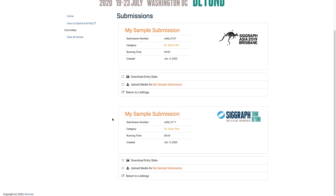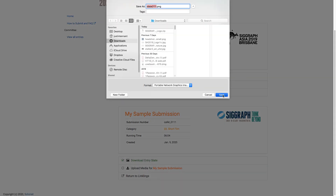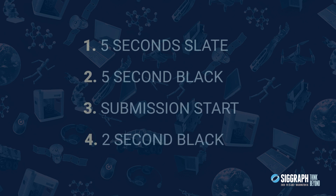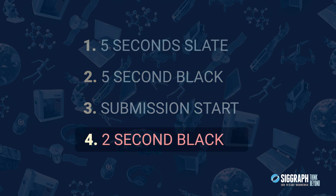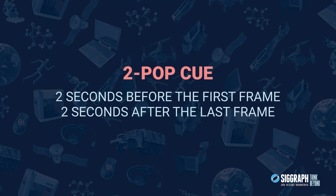Once I click the link, I'll be taken to the Video Upload webpage. The first thing I'll need to do is download the Entry Slate. Each slate is auto-generated for each entry, and I'll need to include this at the beginning of my video. We require that this slate be presented in the following order: 5-second slate, 5-second black, submission start, 2-second black. We also require an audio and visual 2-pop cue 2 seconds before the first frame, and 2 seconds after the last frame of the work. We have more specifications on video and audio formats, including end credit durations, listed on our website, so you can click on the link provided. We've also included the link in the description of this video.